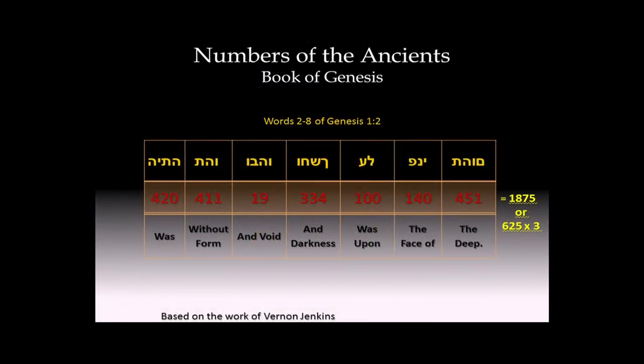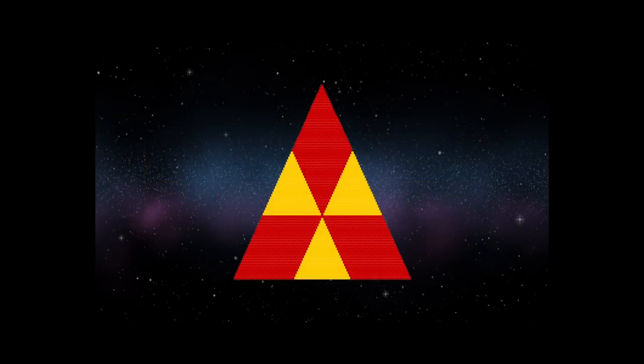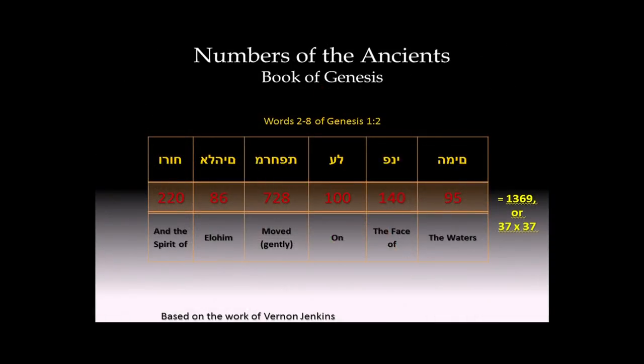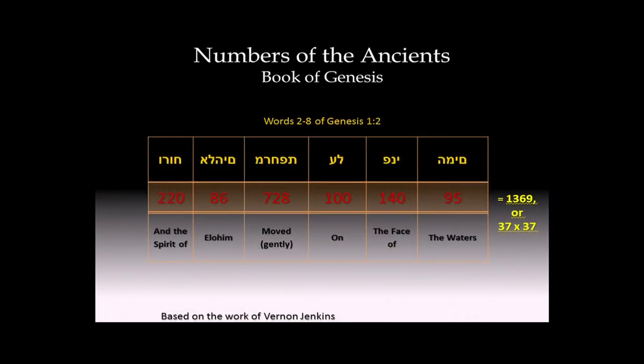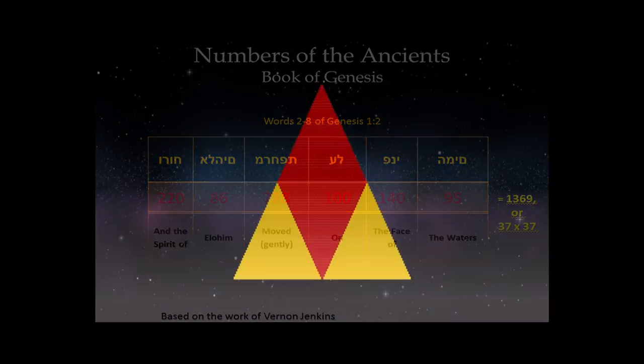The next one comes from Genesis 1-2, words 2 through 8, which states, was without form and void, and darkness was upon the face of the deep. The numerical value of this is 1875, or 625 times 3, which gives us three 625 rhombus insets. Next, words 2 through 8 of Genesis 1-2, and the spirit of the Elohim moved on the face of the waters. This has a numerical equivalent of 1369, or 37 times 37, which gives us a 1369 rhombus inset, still perfectly in the 216-outline triangle.